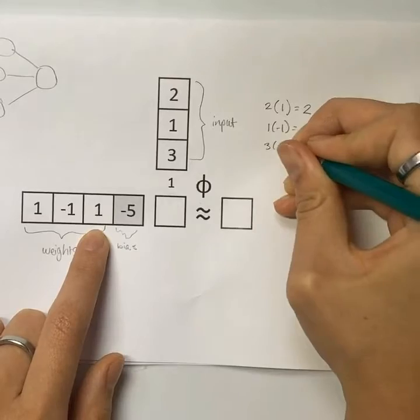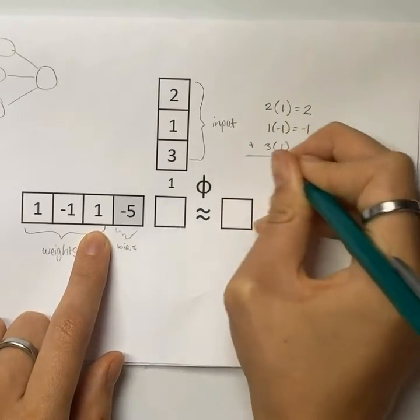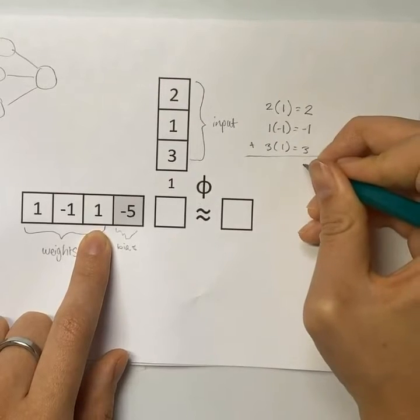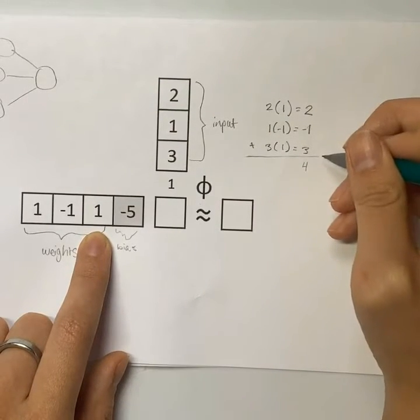Now the third input is multiplied by the third weight and we sum all of this to get 4 because that's 2 plus 3 which is 5 minus 1.